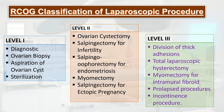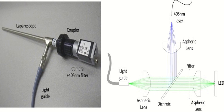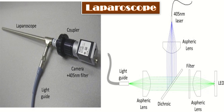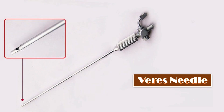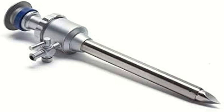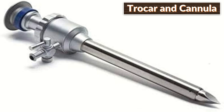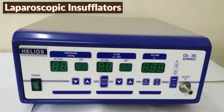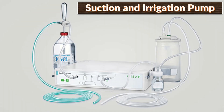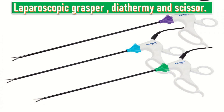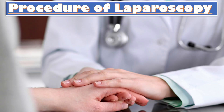Equipment required for laparoscopy includes the laparoscope, the Veress needle which is 120mm long, a 2mm short trocar and cannula of sizes 5mm and 10 to 12mm used to puncture the abdominal wall, laparoscopic insufflator, suction and irrigation pump, laparoscopic grasper, diathermy, and scissors.